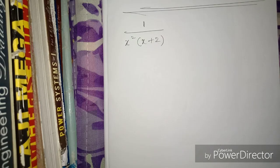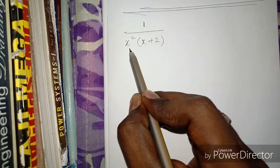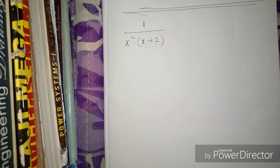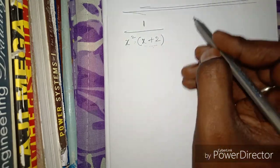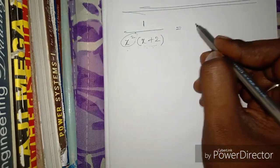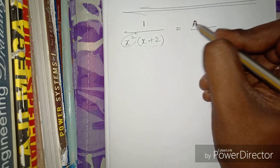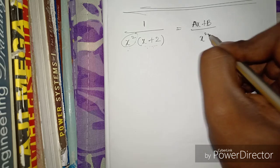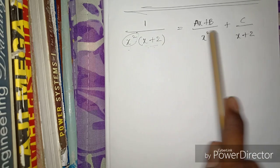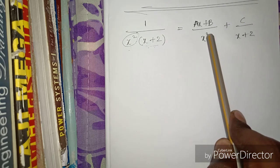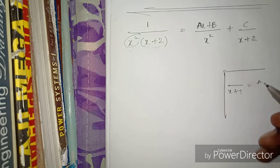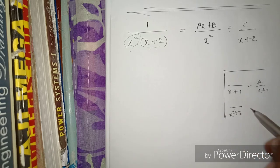Next problem: 1/(x² × (x + 2)). Here we have x squared — a repeated factor. When we have a degree-two factor like x² in the denominator, we write (Ax + B)/x² for that part. For the linear factor (x + 2), we write C/(x + 2).